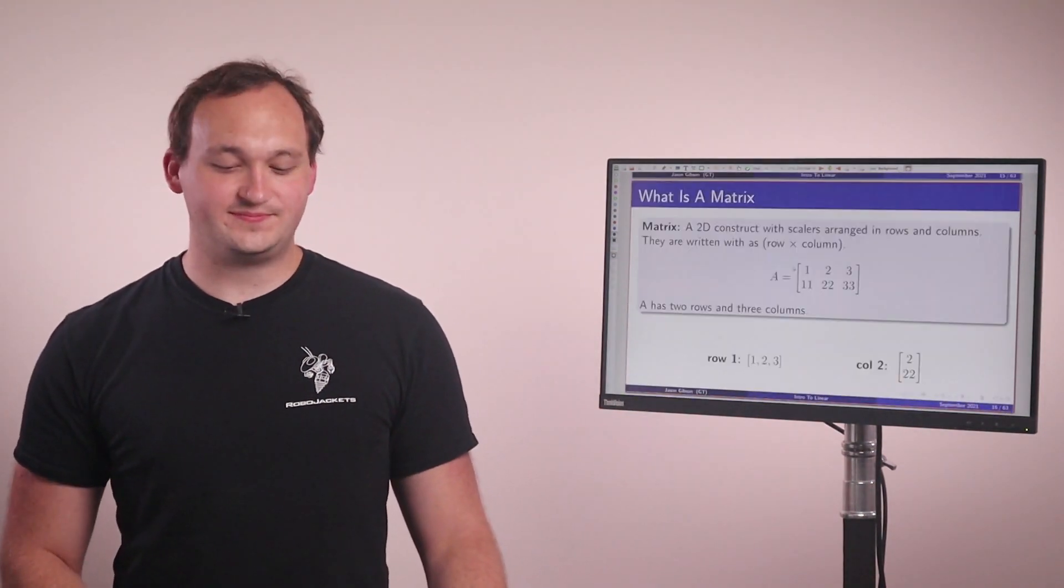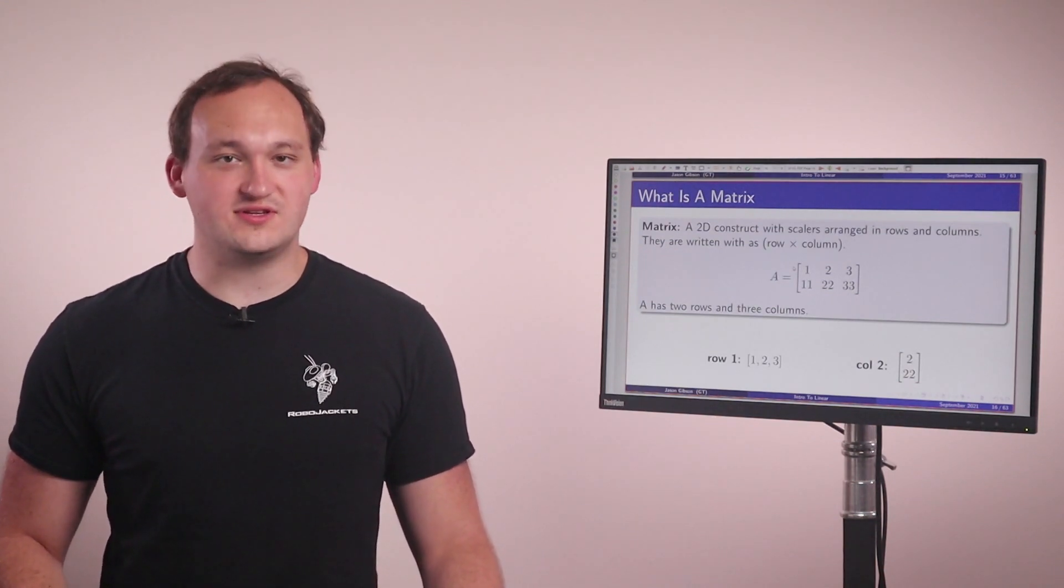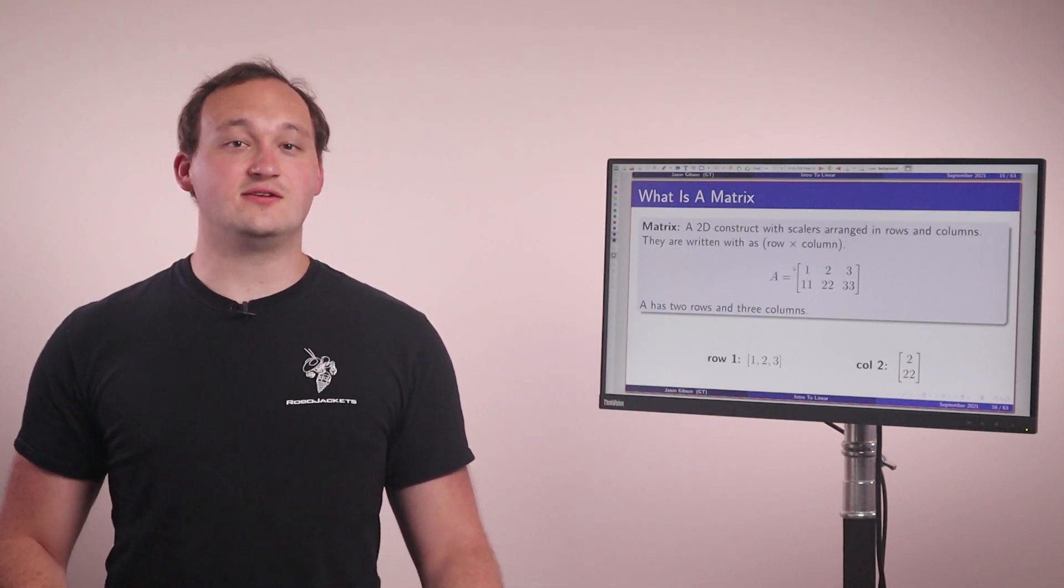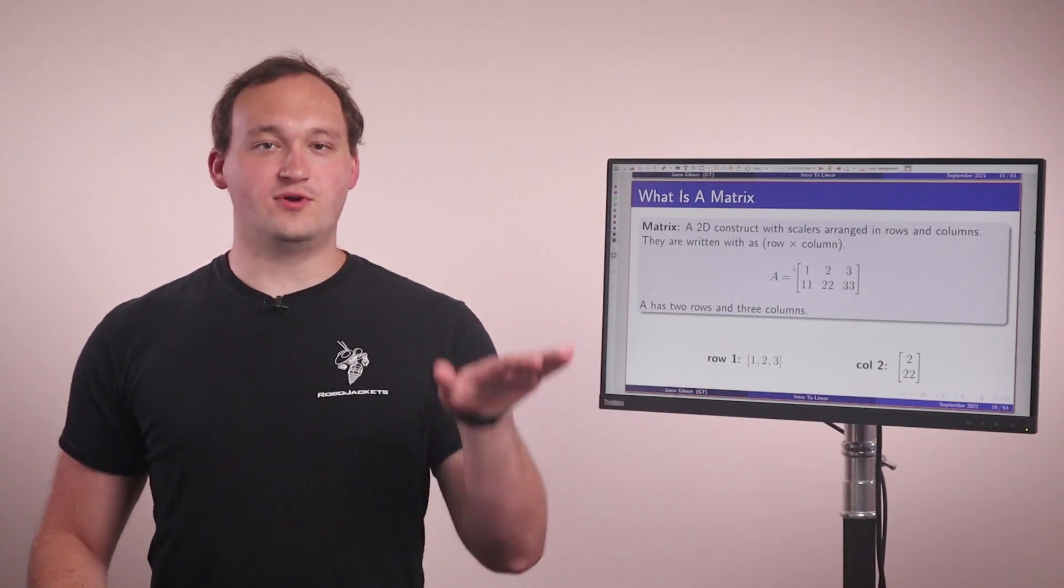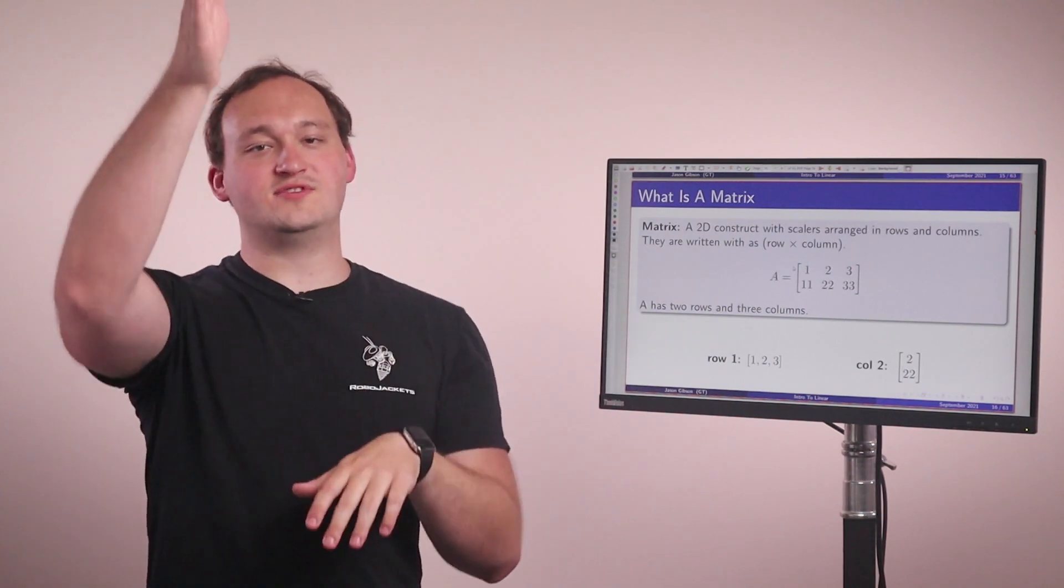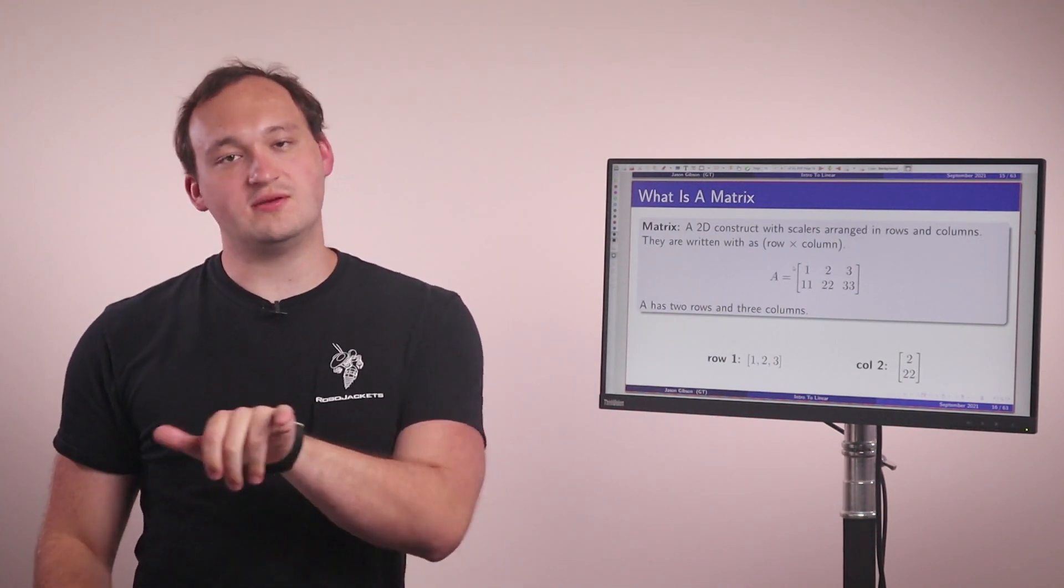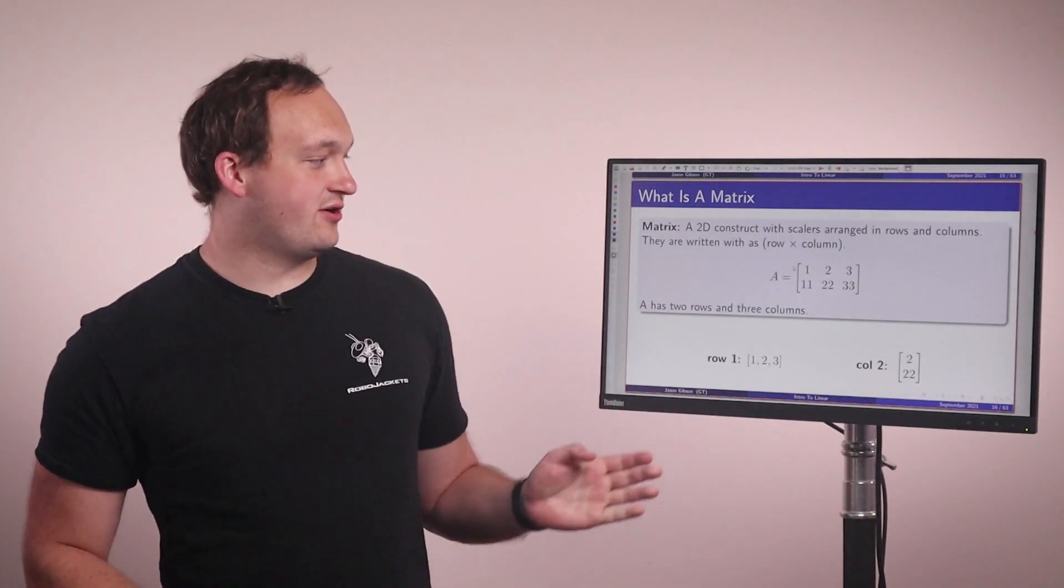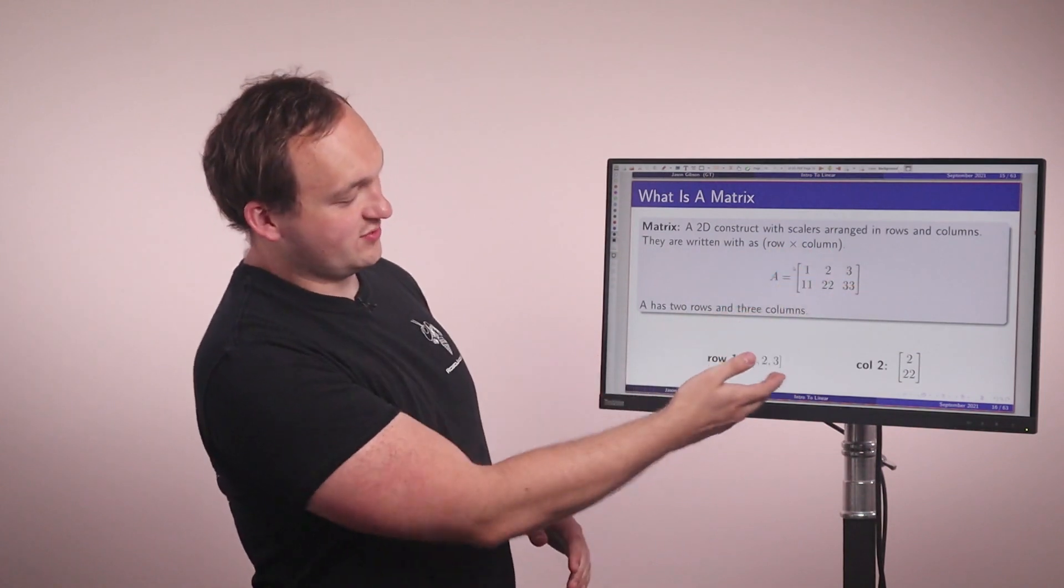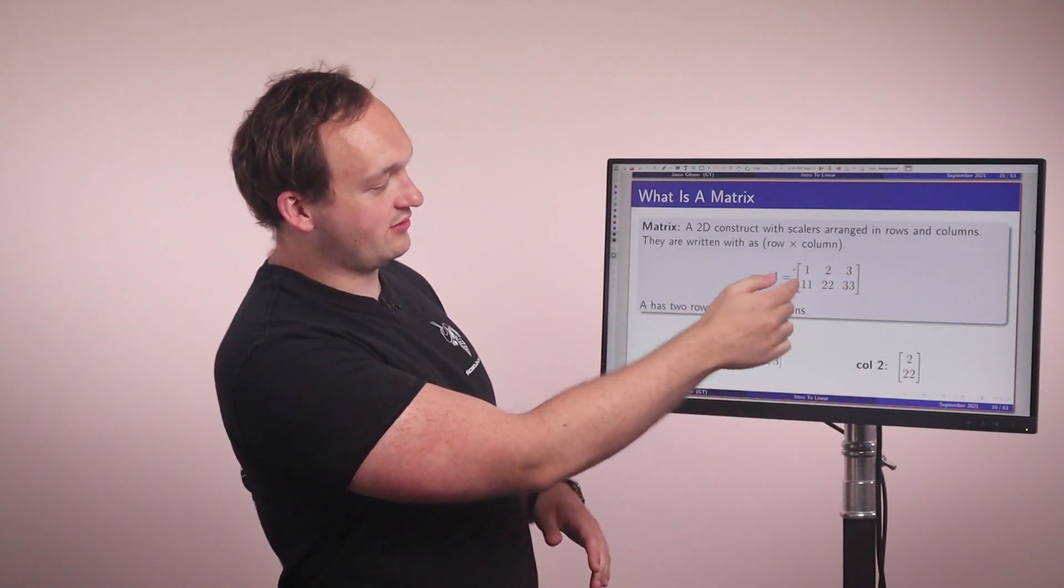The next mathematical construct we have is called matrices. So like a vector is a 1D representation of scalars, a matrix is a 2D representation of scalars. So not only do we have a single line, we have multiple lines combined together. So we have rows, which go like this, and then columns that go like this, and matrices are denoted by rows times the columns. So this A matrix here is a two by three matrix. So you can see here, row one going across the top is one, two, three. And you can see that the second column 222 is the second column here.